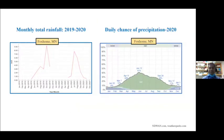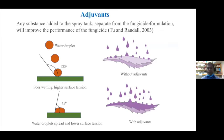Last year and this year the rainfall pattern at Foxholm indicated that mostly in the growing season there was less rain compared to 2020, with at least 41 percent daily precipitation chance at Foxholm this year. Adjuvants are products — other than the fungicide formulation itself — added to the spray tank to improve the efficacy of fungicide. When spray solution is applied without adjuvants, because of higher surface tension it has lower wetting capacity. But when added with adjuvants, it reduces the surface tension and improves better coverage on the spray surface.